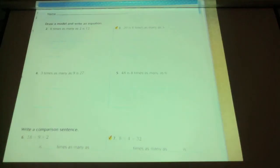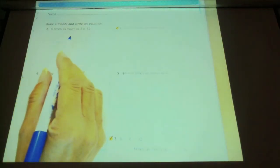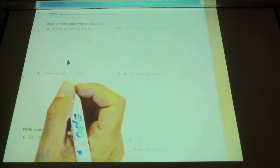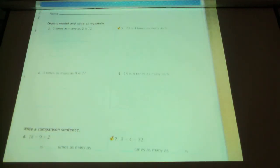6 times as many as 2 is 12. What is the product here? What is the answer? Nicole. 12 is the answer.